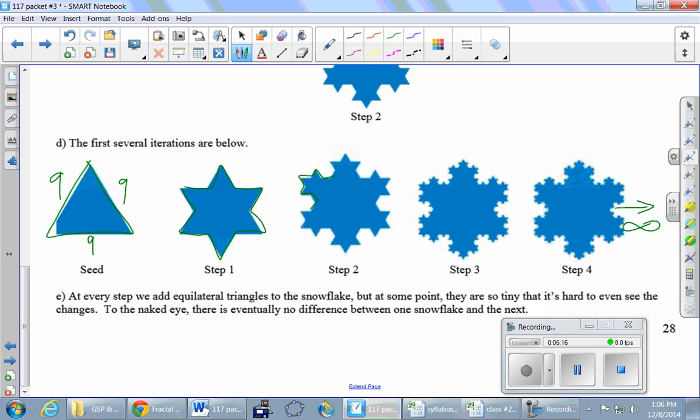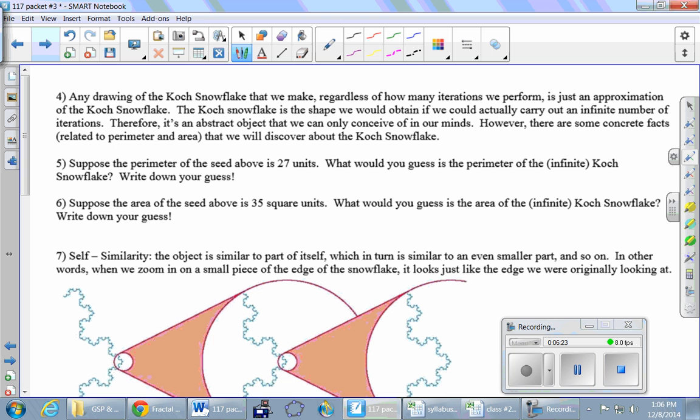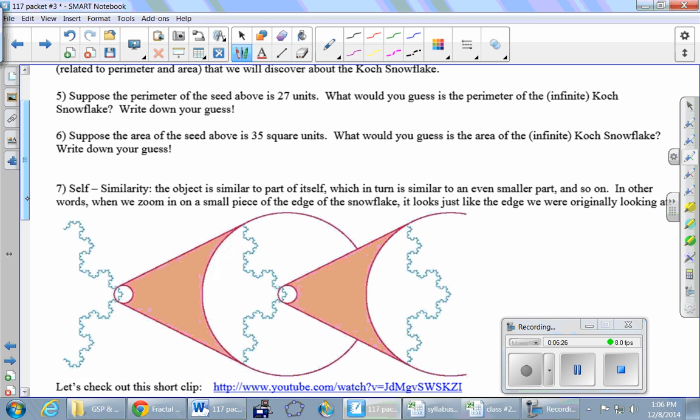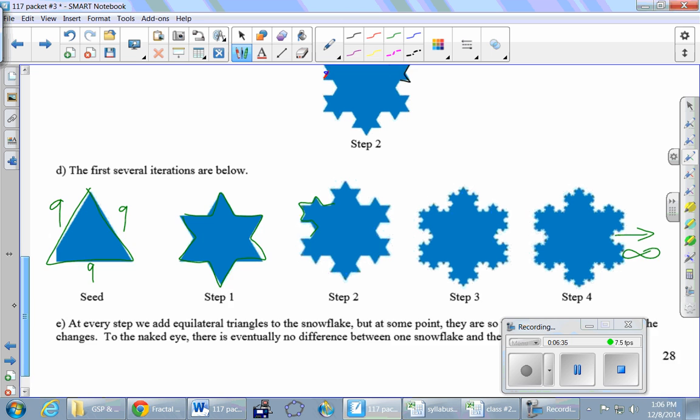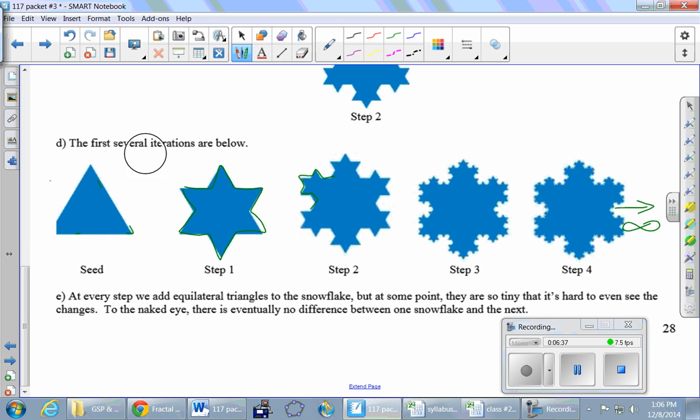Let's take a look at number 6. We'll go to Ricky. Now we're thinking areas. We're going to assume the area of this guy is 35. What about the area of the step 1 snowflake? More or less or equal to 35? Definitely more, right? Because we added three little triangles.